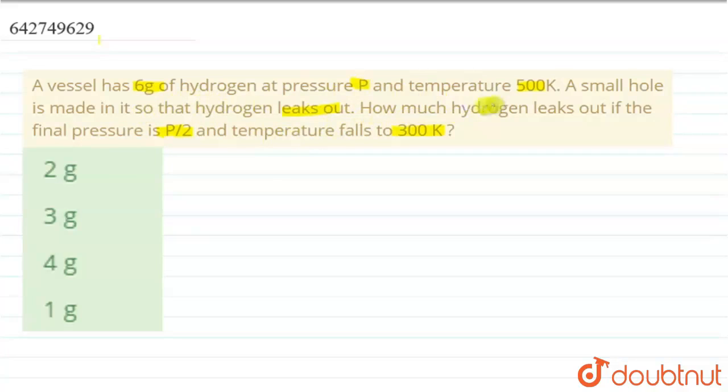And the pressure and temperature change as per given information. So what is the amount of hydrogen leaked? That is being asked. The volume is constant because the vessel is the same. We have to assume that there is no significant change in the volume of the vessel.